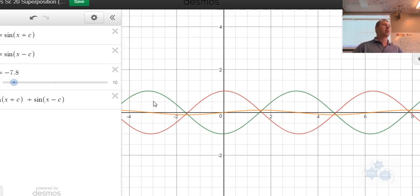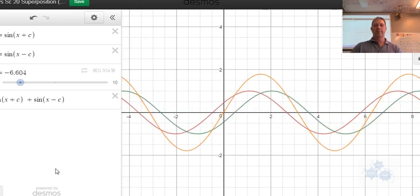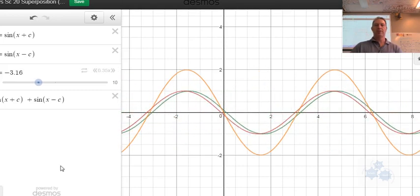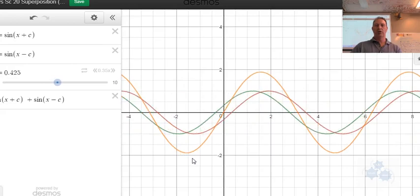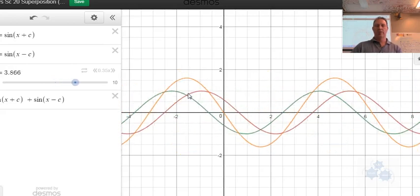So the sum of the functions is the resultant function. Now let's go back to our notes and let me just play this one more time. Okay, so the green plus the red gives you the orange.